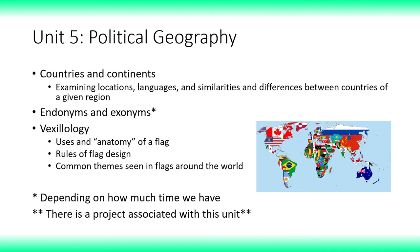Next up is political geography. We'll look at different countries around the planet and different themes common to certain regions, such as languages, religions, customs, and flag design. We'll look one continent at a time and examine what's similar between countries and how it changes from one continent to the next. We might also look at endonyms and exonyms — different ways of naming a region. Endonyms are names a region gives to itself, while exonyms are names given to them by others.